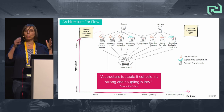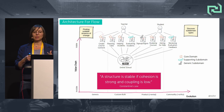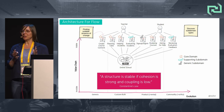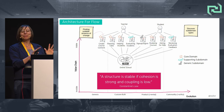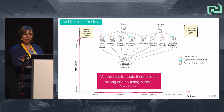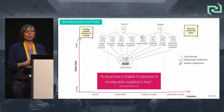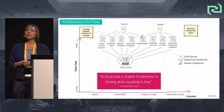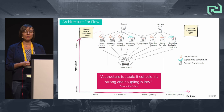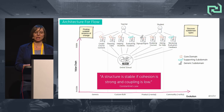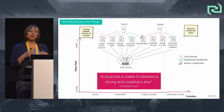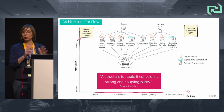Switching from the problem domain to the solution space: currently the solutions of our subdomains are all mingled together in a tightly coupled monolithic big ball of mud with a messy model and no clear boundaries. Constantine's Law says structure is stable if cohesion is strong and coupling is low. High cohesion and loose coupling enable the system to be amenable to change and responsive to change. To achieve high cohesion, we need to group related business behavior together in one place.